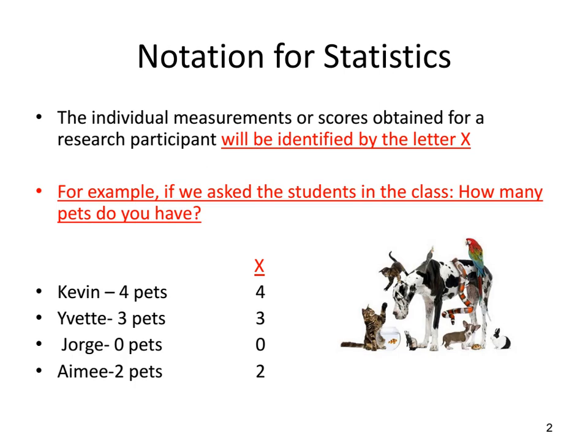There could be different kinds of pets — there could be cats, there could be dogs, there could be parrots, there could be snakes as you can see in the photo. But what we're interested in is not in the different types of pets they have, but how many total do they have. So we see that Kevin has four pets, Yvette has three pets, Jorge has zero pets, and Amy has two pets.